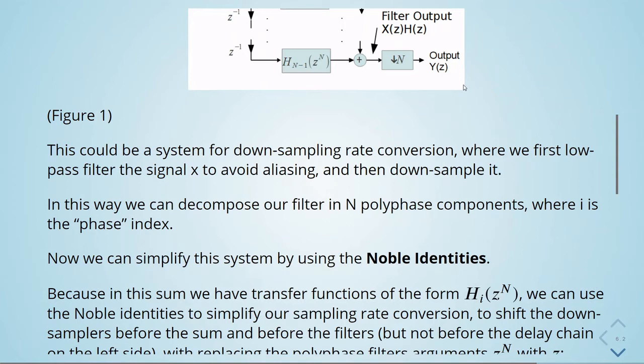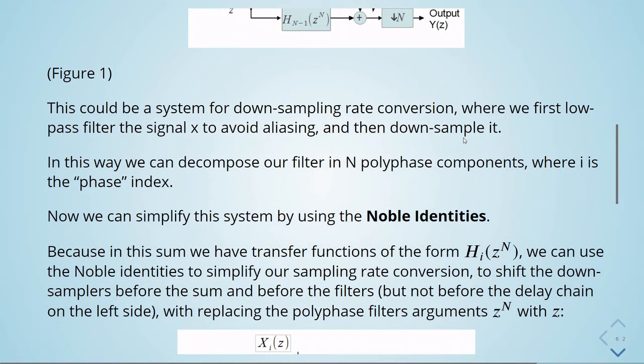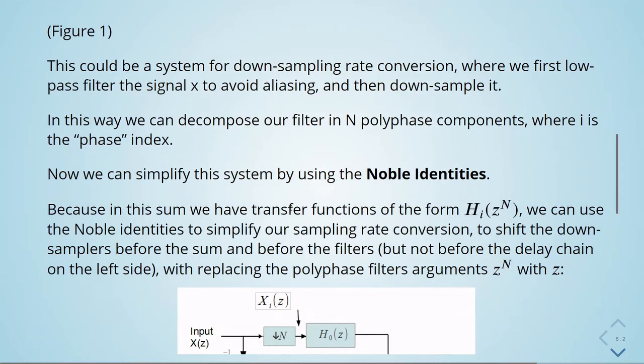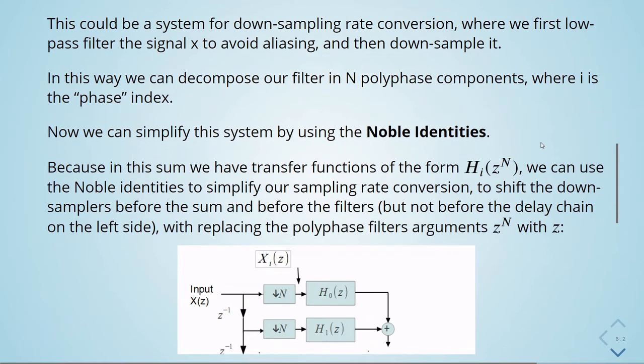We can simplify the system using the Noble identities. Because in the sum we have transfer functions of the form H_i(z^N), we can use the Noble identities to simplify our sampling rate conversion, to shift the down-samplers before the sum and before the filters, but not before the delay chain on the left side.